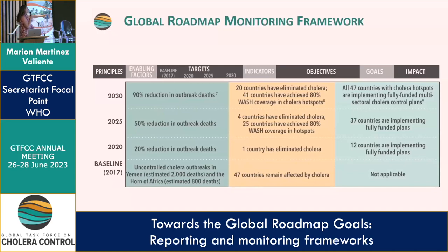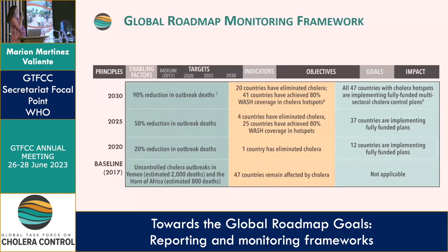We have the reduction in number of deaths. Our ultimate goal is to reduce mortality by 90% and to have no more uncontrolled outbreaks. And these here are the intermediary milestones that we agreed upon as a task force.